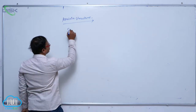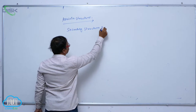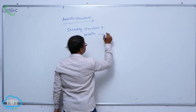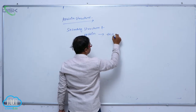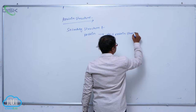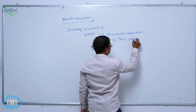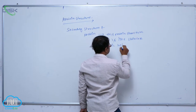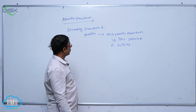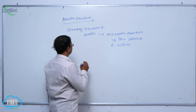Secondary structure of protein. According to biologists, proteins are not always rigid or straight-line structures. Sometimes they show helical structures, like a staircase or helices.